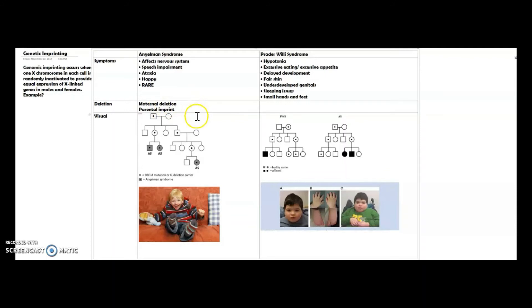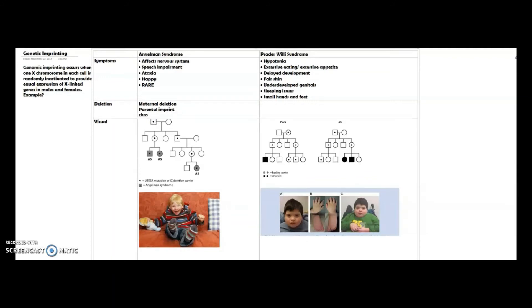You'll have the maternal deletion in a specific gene called UBE3A, which you saw in the pedigree below. So that's where the deletion occurs on that gene. Maternal deletion, we have a paternal imprint, and this occurs on chromosome 15.